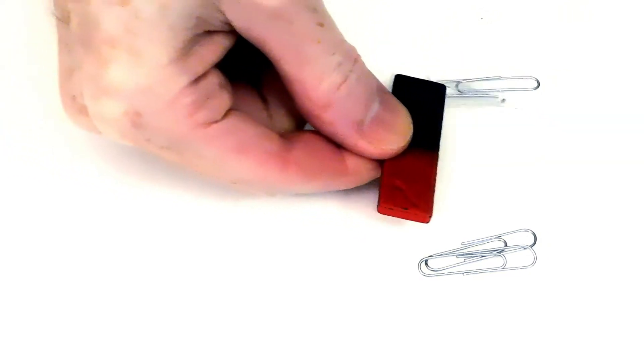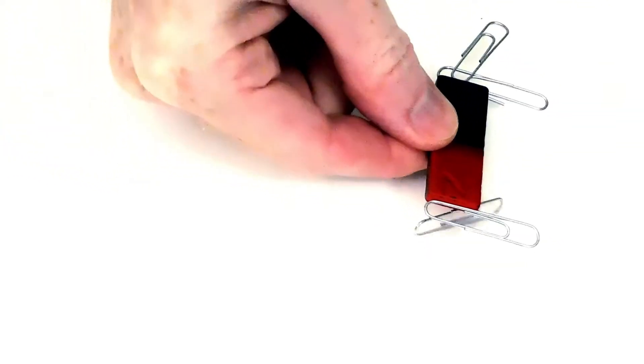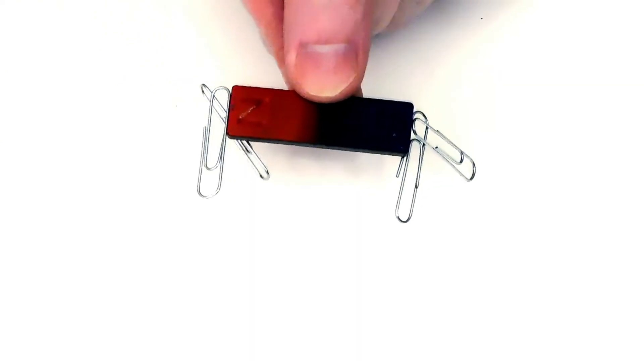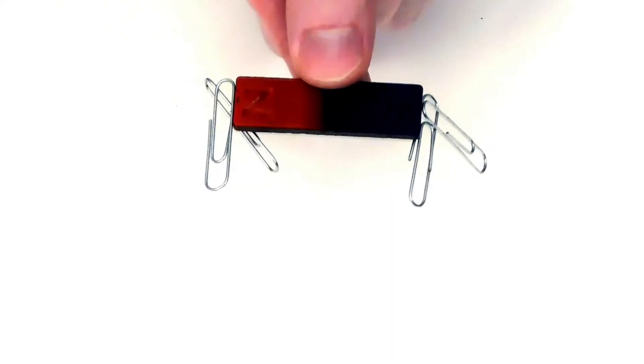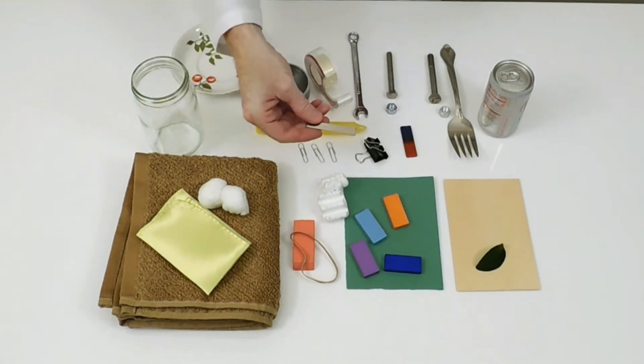Magnets can attract some materials that aren't magnets. When this happens, such as with these paper clips, both poles of the magnet attract the other material. This magnet has no paint on it, but it works just like other magnets.